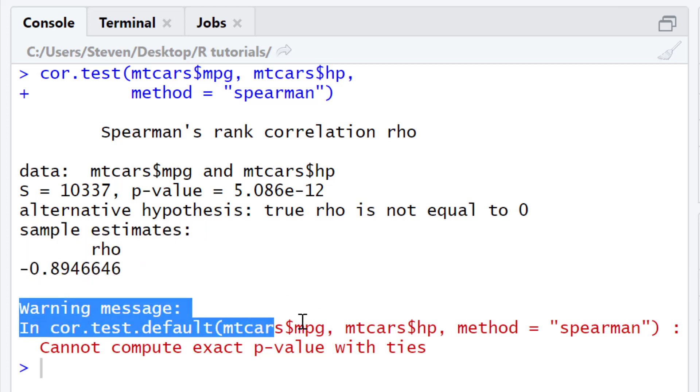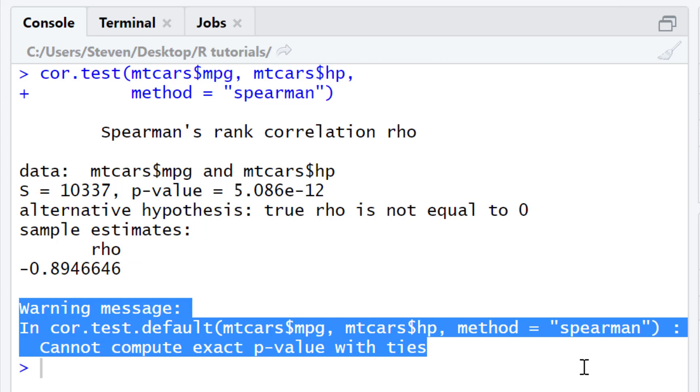Note underneath there's a warning message here. This warning message is stating that the test cannot compute exact p-values with ties. A tie is when there is a variable containing more than one data point with the same value.